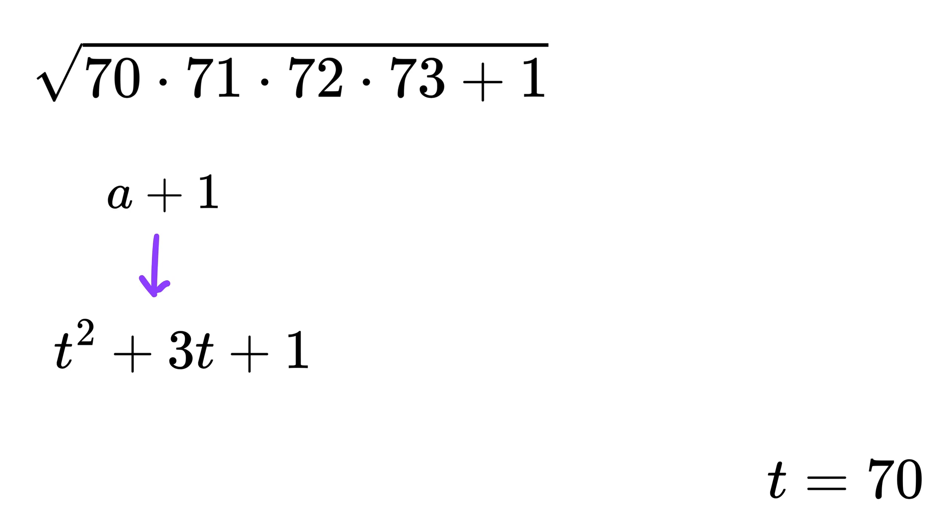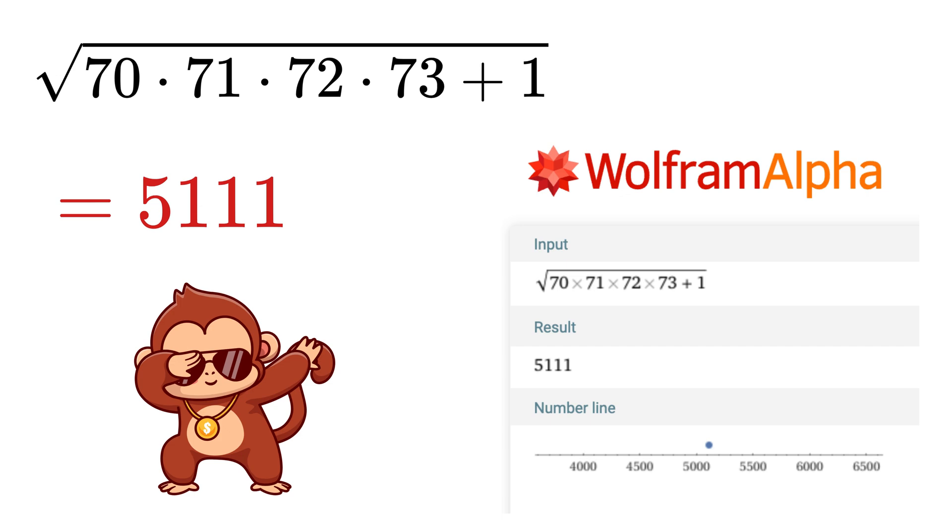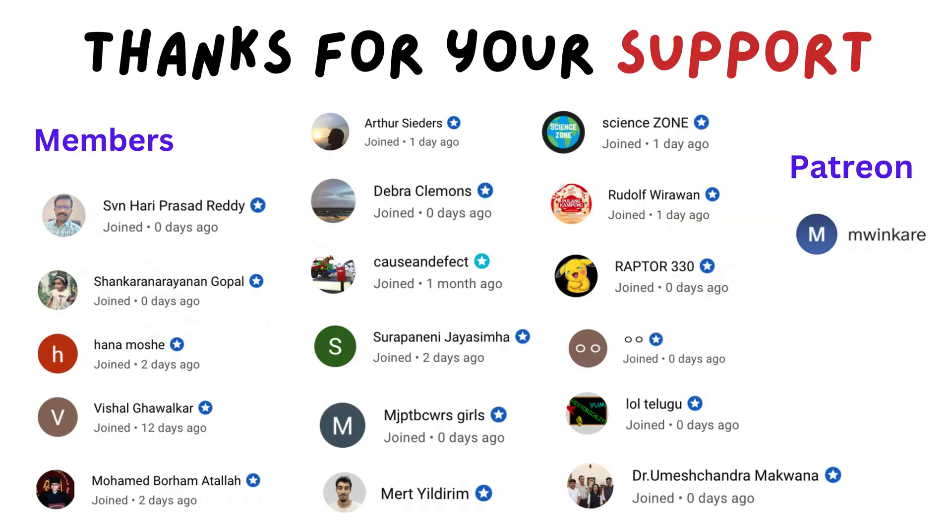Now plug in the value of t as 70, so t squared is 4900 and 3 times t is 210. Add one more and you get 5111. That was super duper cool, so go ahead, you.